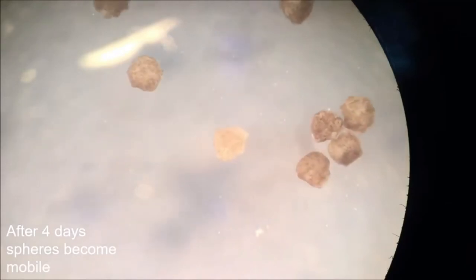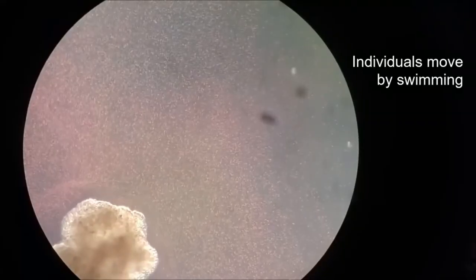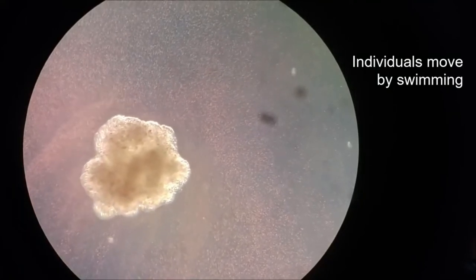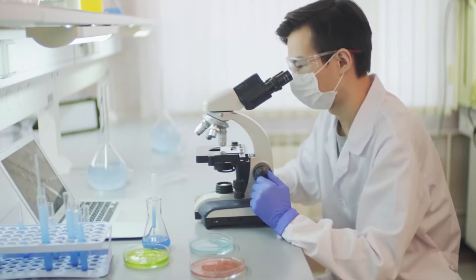These biological robots, made from frog cells, literally replicate by smushing loose cells into new robots, which is a reproduction method not seen in nature.